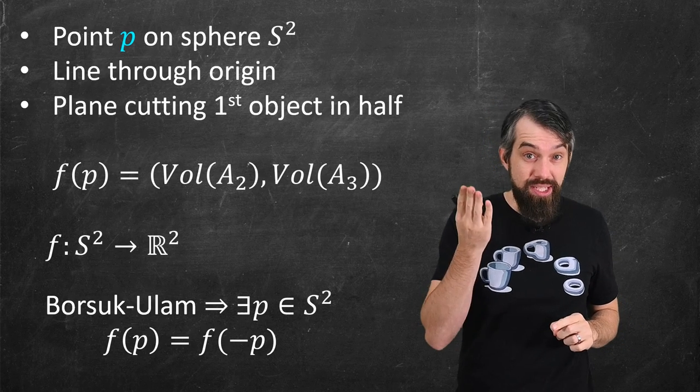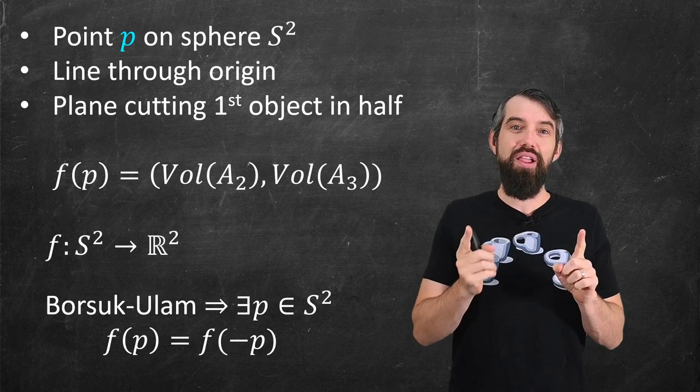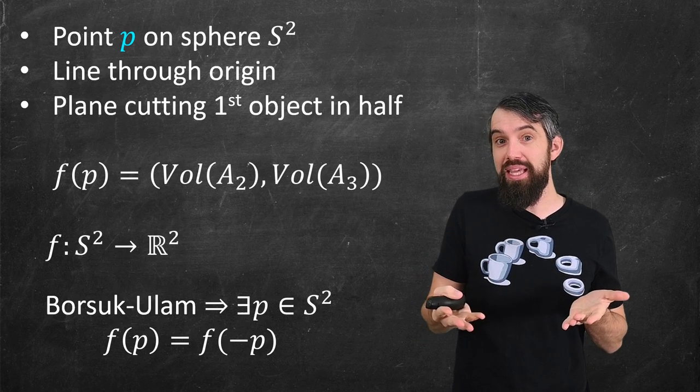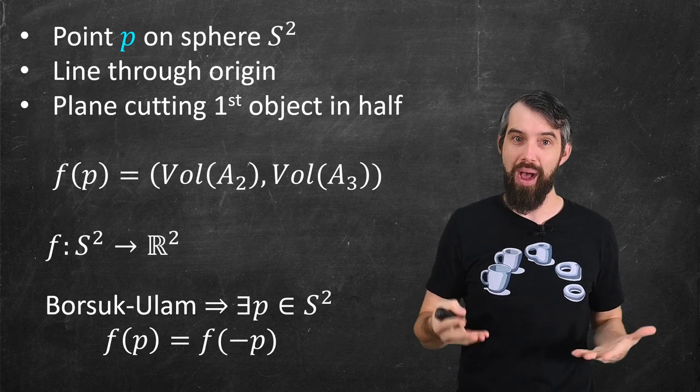And thus it says there is some spot on the surface of the sphere, some direction, where this function evaluated at p is going to give the exact same result as this function evaluated at minus p.